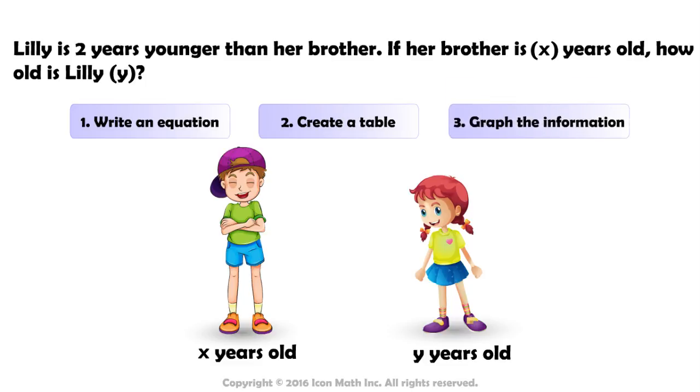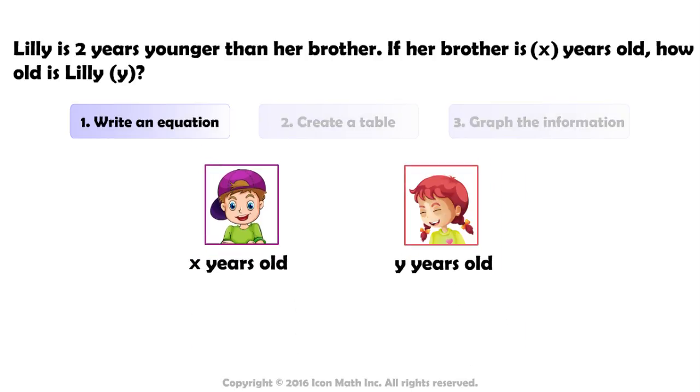In order to determine the correct equation, let's start by considering how old Lily would be if her brother is five. Since Lily is two years younger than her brother, Lily would be five minus two or three years old when her brother is five.